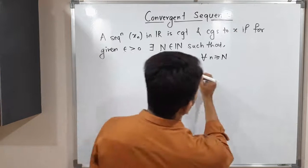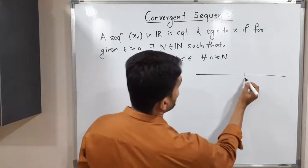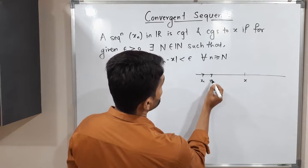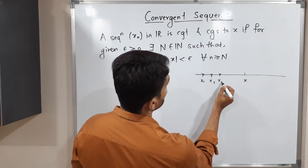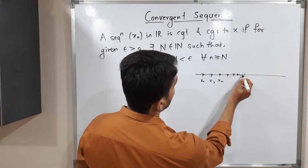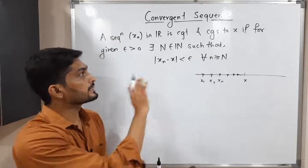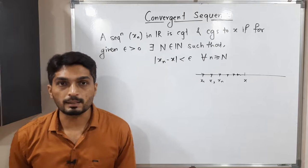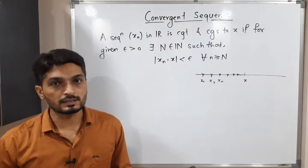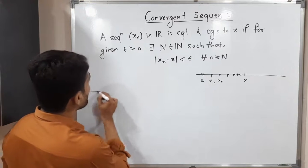This means on the real line there is one point x, and we have a sequence x₁, x₂, x₃, and so on. This sequence converges — meaning it is approaching this point x. Using this epsilon concept we define convergence, and you are already familiar with this definition of convergent sequence in ℝ.